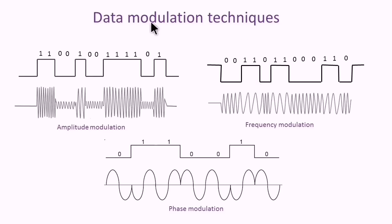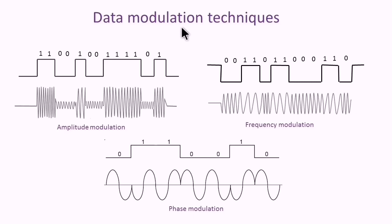Modulation is a process of varying a carrier signal waveform in accordance with the signal of the information to be transmitted. Modulation is required for the signal to be able to transmit through space over longer distances and sometimes to be able to share a common communication channel. Three types of modulation are discussed here.